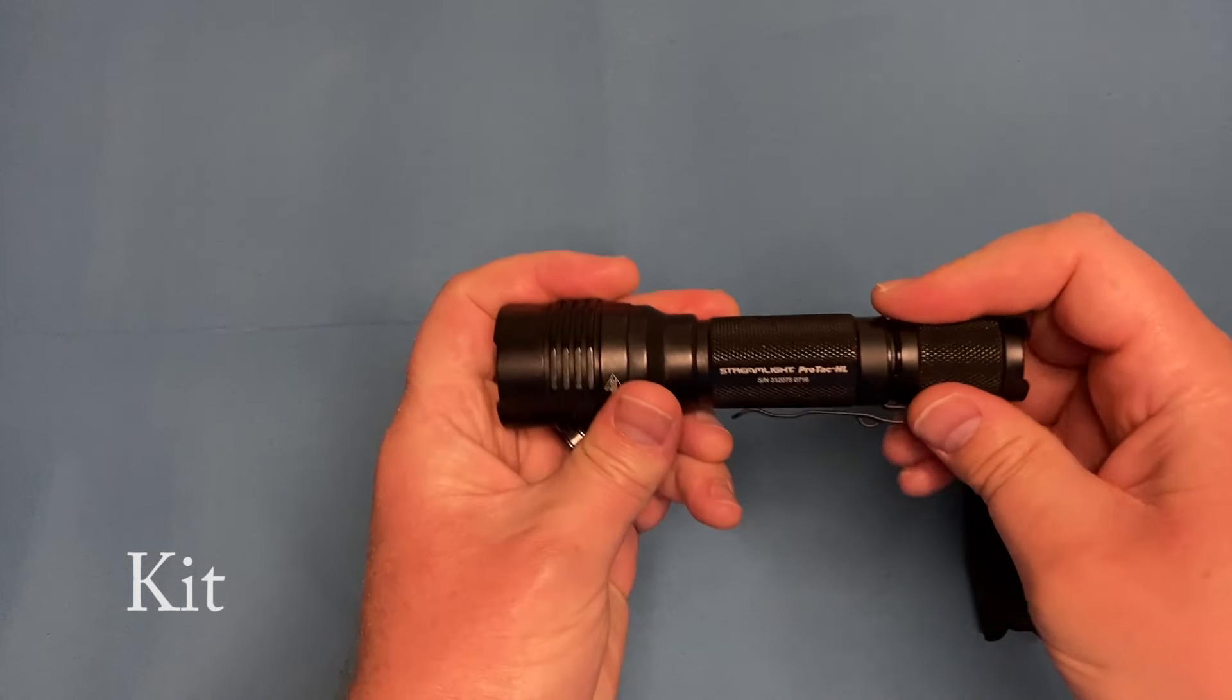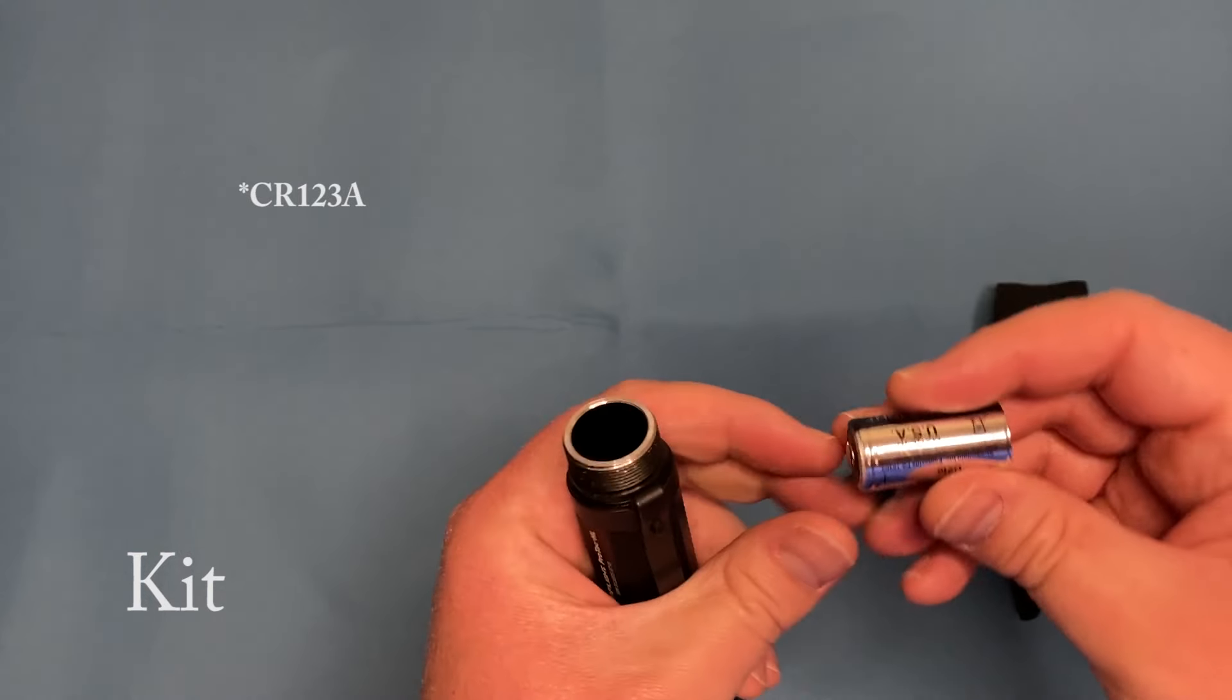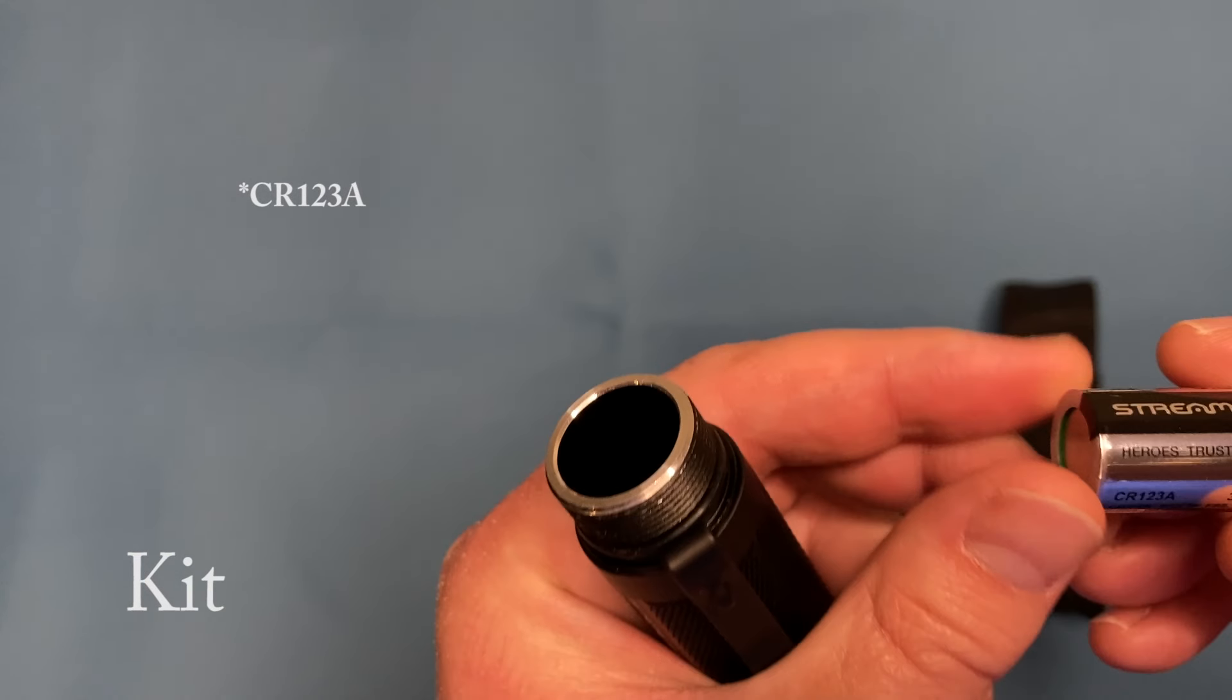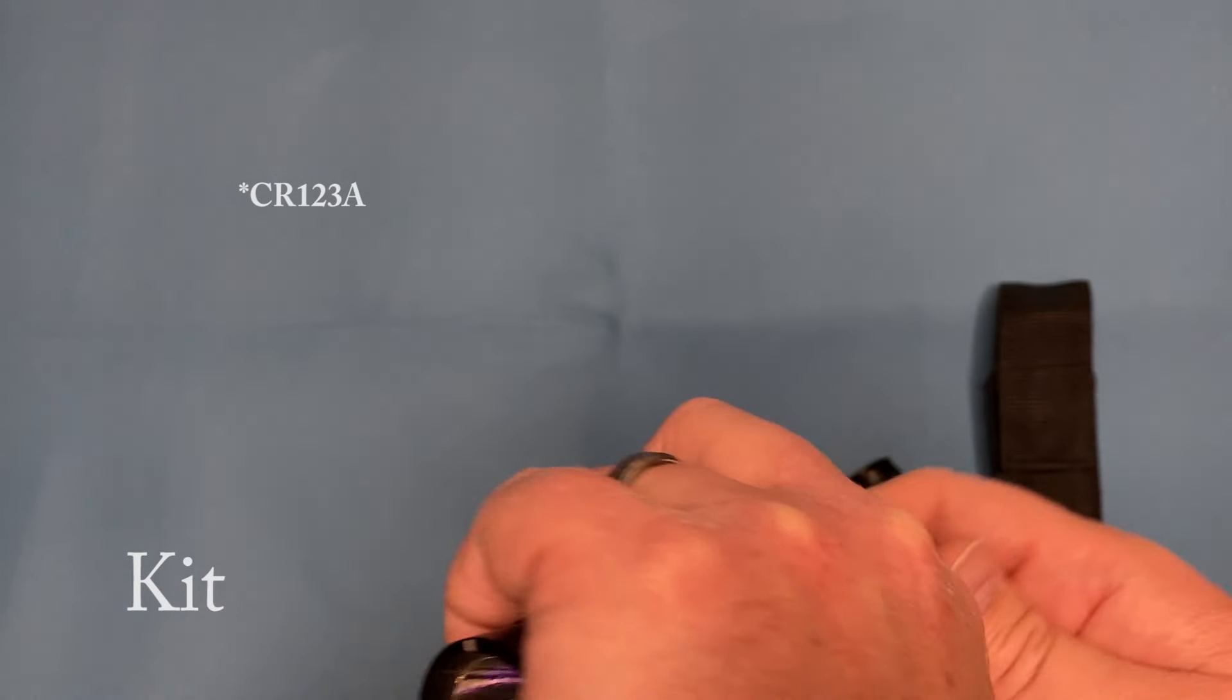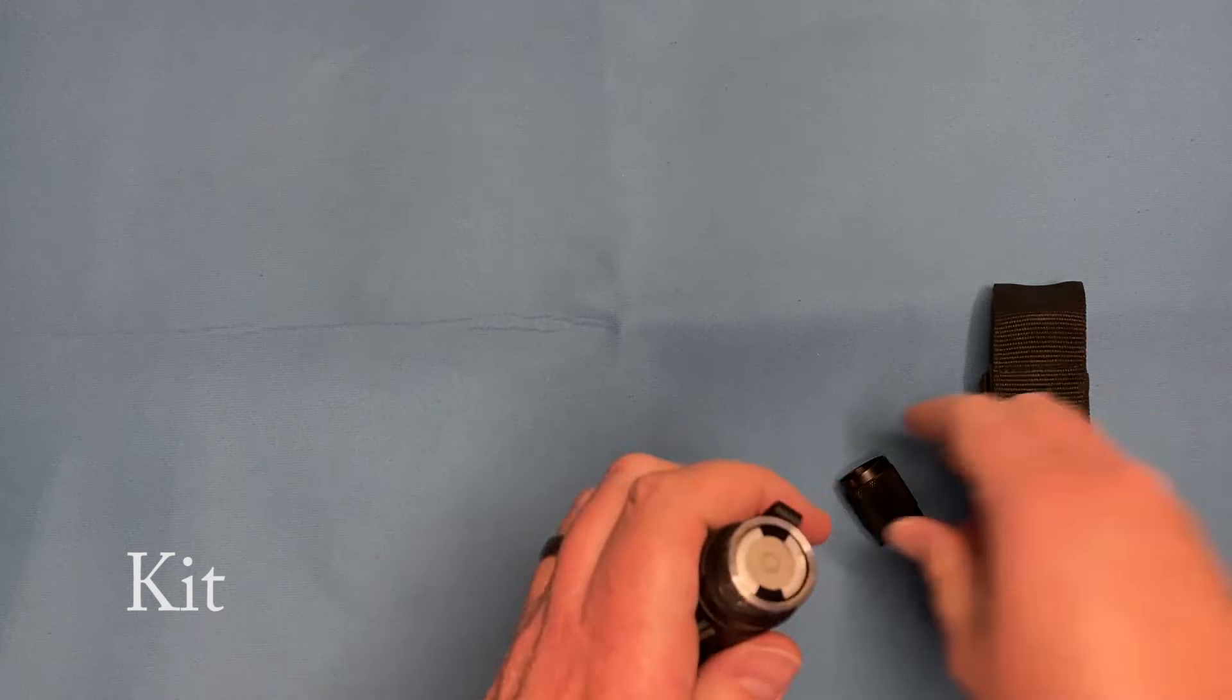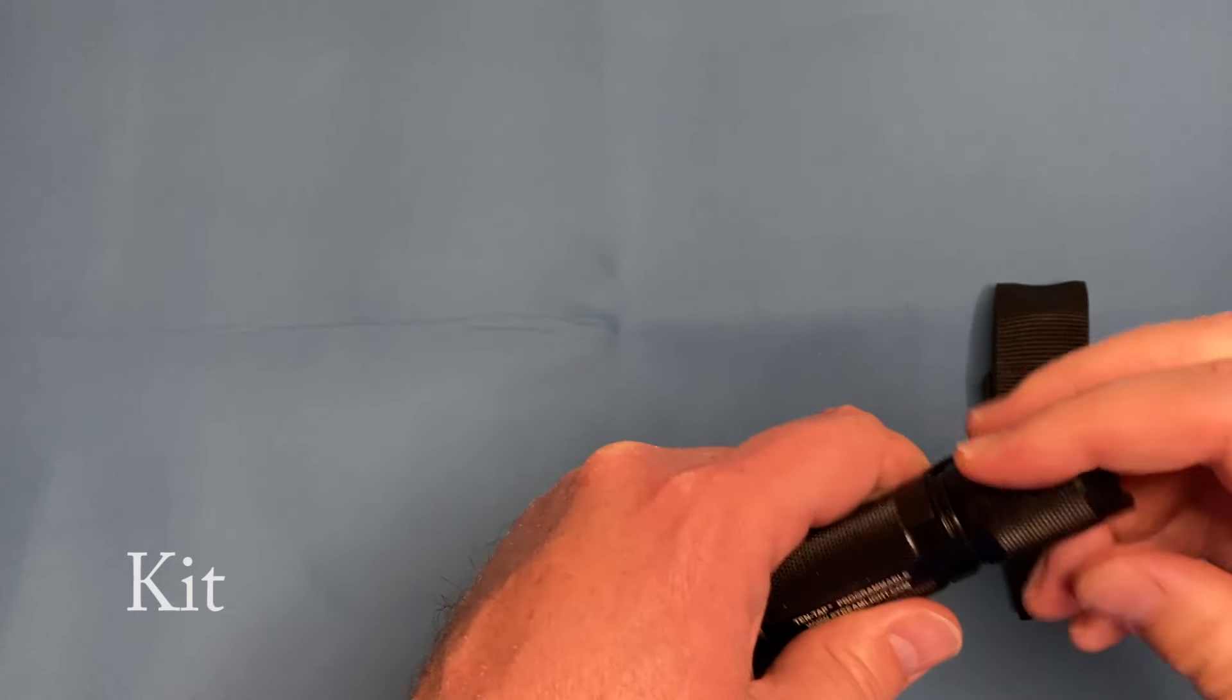Another downside of this particular flashlight is it takes odd batteries. I think these are called C123As. Let me double check that. I'm pretty sure that's what they're called. Yep. C123As, 3-volt lithium. And it takes two of them. These are not the cheapest to find. But these are the original batteries that I've had in this, so they're still going strong and the beam is still super bright.